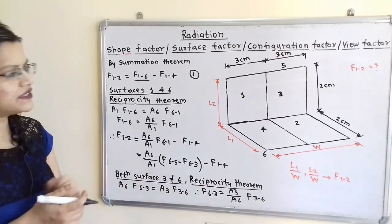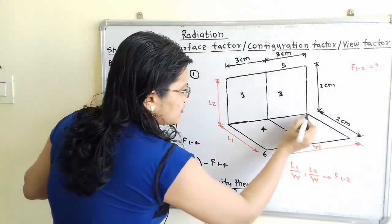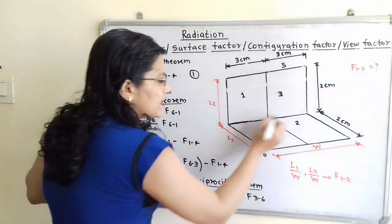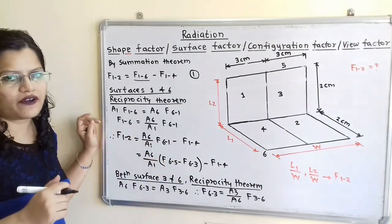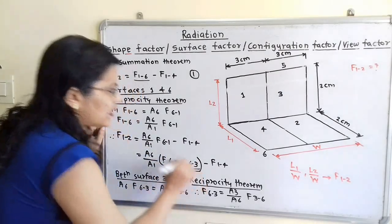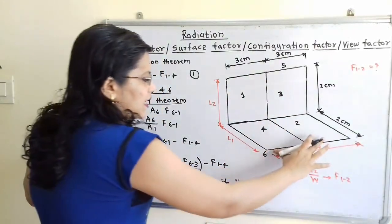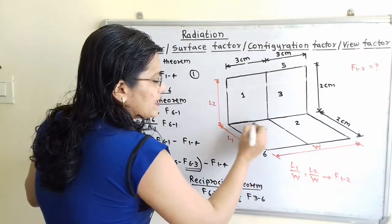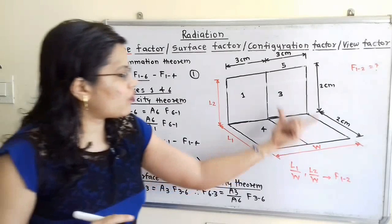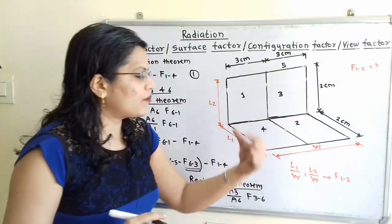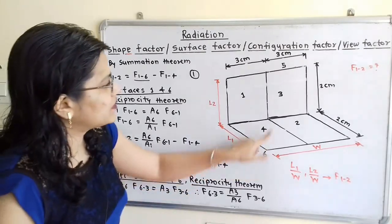For surfaces 6 and 5, they share a common edge and the same width, so F(6→5) can be found from the graph. However, for surface 6 and section 3, they have different widths and no common edge — the edge of section 3 is on one side and the edge of surface 6 spans the full width — so those two conditions are not satisfied. We need to make further changes for F(6→3).